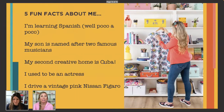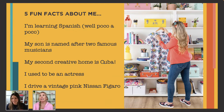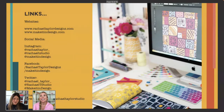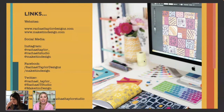Some quick fun facts: I'm learning Spanish but very slowly. I have a little boy who's eight, named after two famous musicians — his middle name is Lennon, and I'm based in Liverpool. My second creative home is Cuba. I used to be an actress. I drive a vintage pink Nissan Figaro, and I painted the exterior of my home in Liverpool pink about 18 months ago — everyone thinks I did it for the Barbie trend, but I was already living in this pink world!